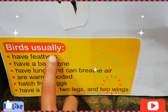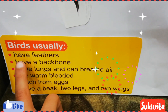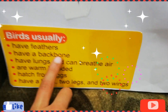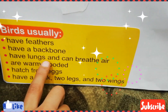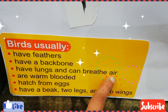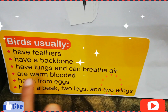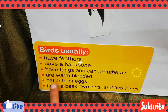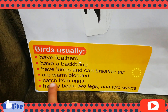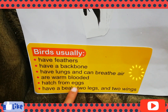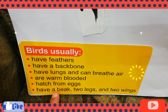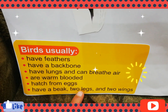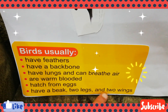Birds usually have feathers, have a backbone, have lungs and can breathe air, are warm-blooded, hatch from eggs, have a beak, two legs, and two wings.